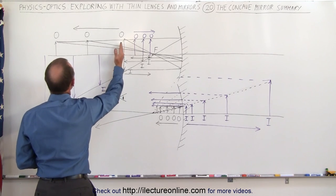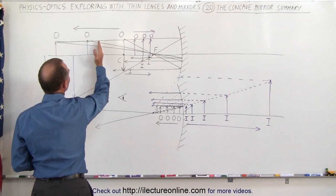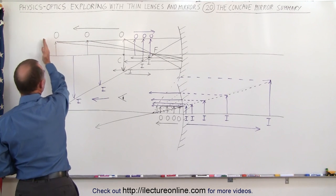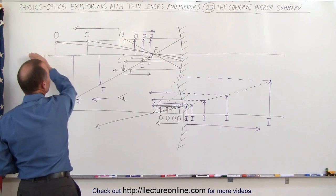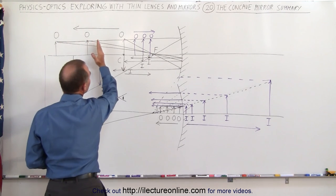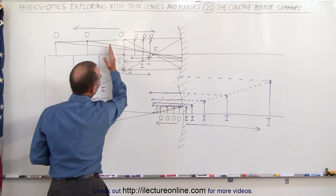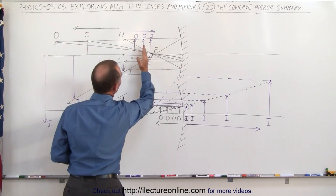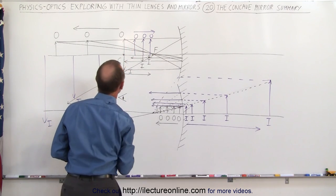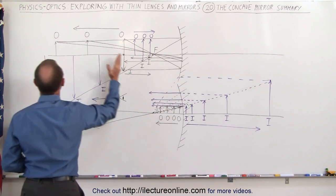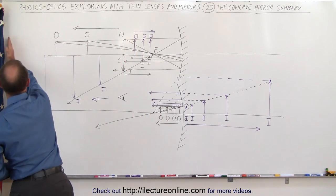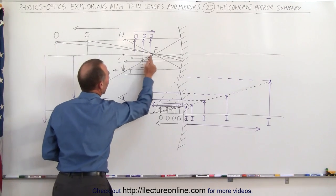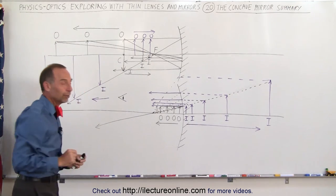As we move the object farther and farther away from that location, we can see that the image will form closer and closer to the focal point. In the limit, as the object goes out to infinity, the image will form at the focal point.